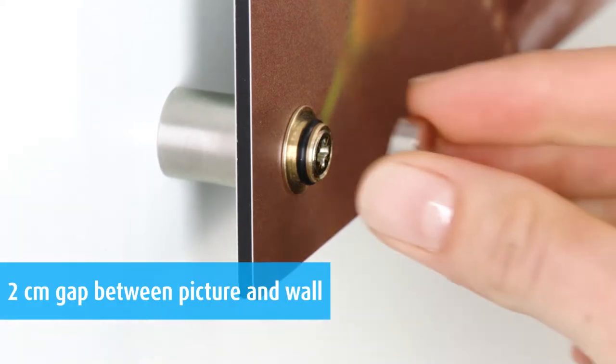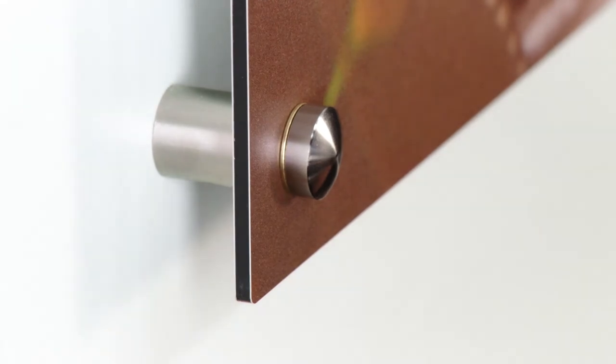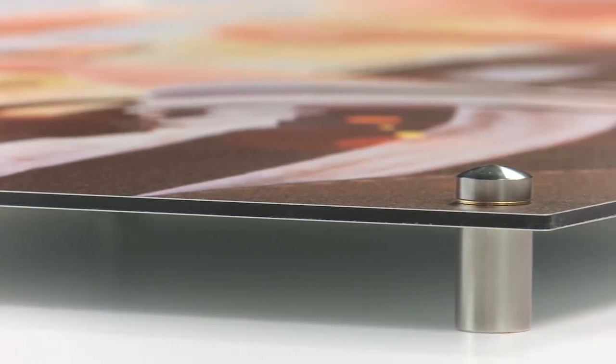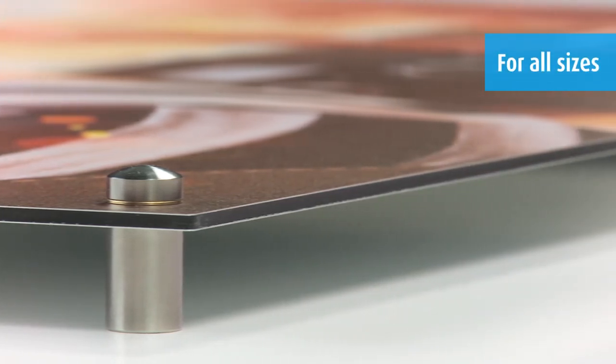The screws stand out about 2cm from the wall, which will give your print a floating effect. The robust screw system is very safe and is therefore available for all sizes.